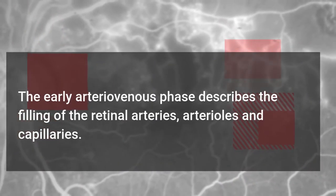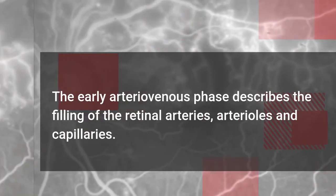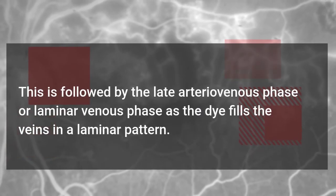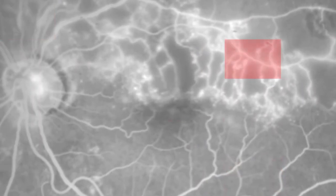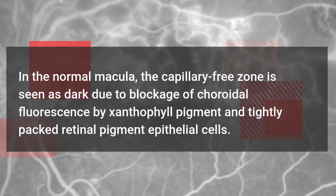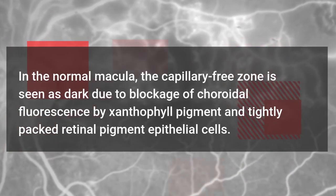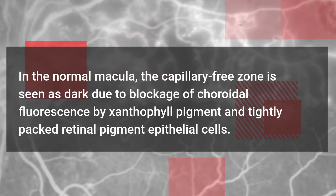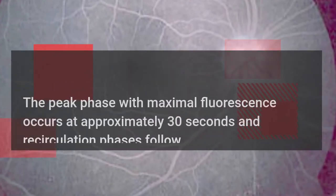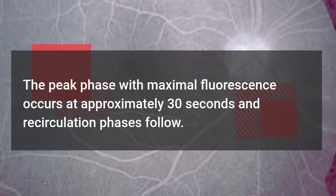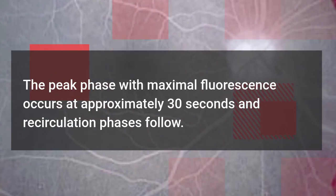The early arteriovenous phase describes the filling of the retinal arteries, arterioles and capillaries. This is followed by the late arteriovenous phase or laminar venous phase as the dye fills the veins in a laminar pattern. In the normal macula, the capillary free zone is seen as dark due to blockage of choroidal fluorescence by xanthophyll pigment and tightly packed retinal pigment epithelial cells. The peak phase with maximal fluorescence occurs at approximately 30 seconds and recirculation phases follow.